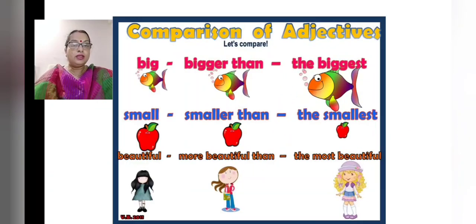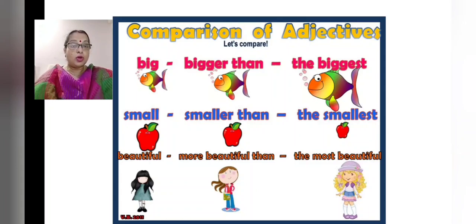Let's see the comparison of adjectives. Positive degree: big. Comparative: bigger than. And superlative: the biggest. Small, smaller than, the smallest. Beautiful, more beautiful than, and the most beautiful.